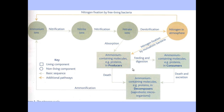On this diagram, anything that is in a box or rectangle illustrates nitrogen found in living things or in locations. Anything in circles shows the forms that the nitrogen is found in. Anything with an arrow shows a process.